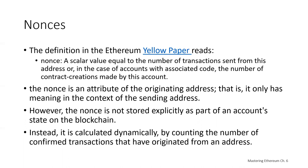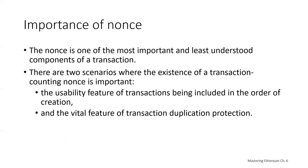The transaction nonce is an important and hard-to-understand component of an Ethereum transaction. The Ethereum Yellow Paper defines it as: a scalar value equal to the number of transactions sent from this address, or in the case of accounts with associated code, the number of contract creations made by this account. The nonce is not stored explicitly on the blockchain — it is calculated dynamically by counting the number of confirmed transactions that originated from the address. There are two key scenarios where the nonce matters: ordering transactions by creation and protecting against transaction duplication.